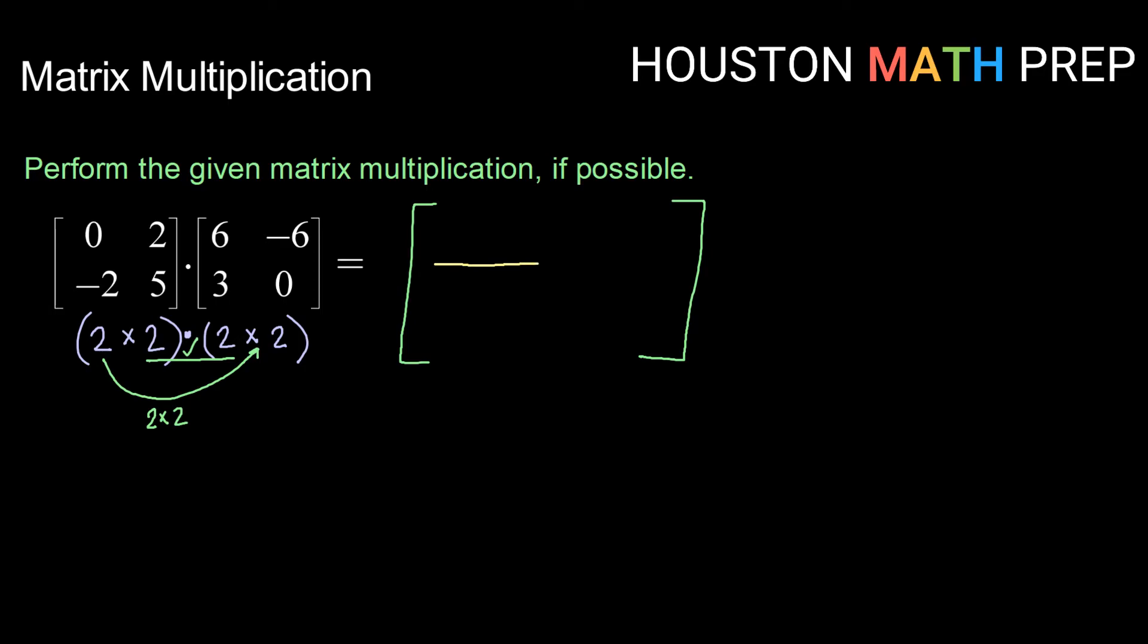So for our value in row 1 column 1, I'm going to distribute row 1 of my first matrix to column 1 of my second matrix. So that will be 0 times 6 plus 2 times 3. And I'll just go ahead and have my final answer matrix over here. So 0 times 6 is 0 plus 2 times 3 is 6. So I have 6 as my value in row 1 column 1.